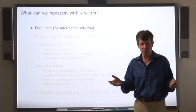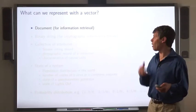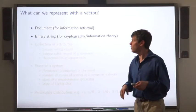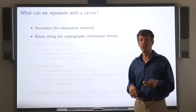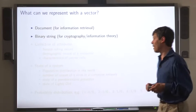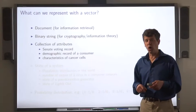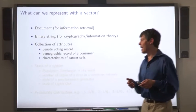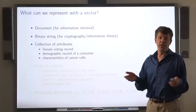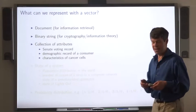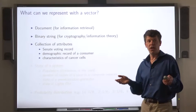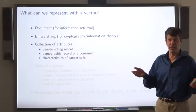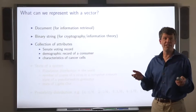So what can we represent with vectors? We've already seen we can represent documents. We can represent binary strings and this will be useful in cryptographic applications. We can use a vector to represent a collection of attributes. For example, the voting record of a senator or the demographic record of a consumer or characteristics of cancer cells.